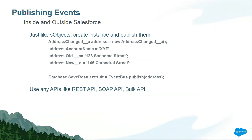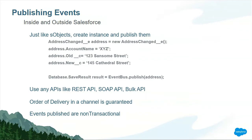Outside of Apex, you can use APIs like REST, Bulk, or SOAP. And once you are publishing those events, the order of delivery is guaranteed, so you will always get access to the latest events. Events that are published are non-transactional in the sense that they cannot be rolled back.